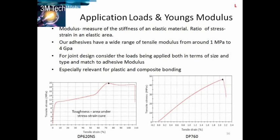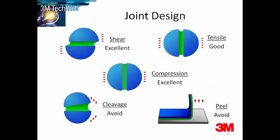Speaking of loads, this data leads us to consider joint design. Joints should preferably be designed for shear, tension, and compression — not peel or cleavage. Tensile is a pulling stress that acts perpendicular to the bond plane. Shear is a sliding stress which acts parallel to the bonding plane.